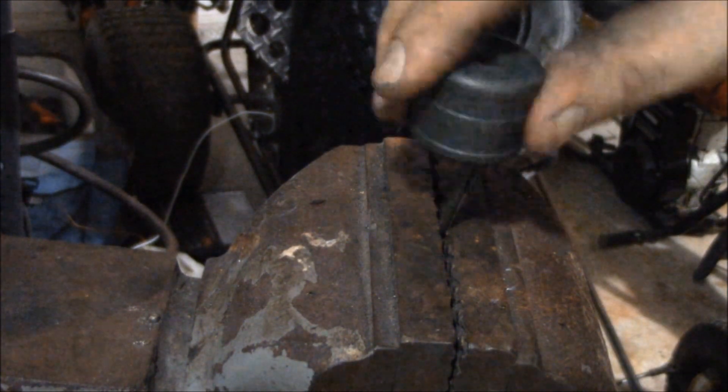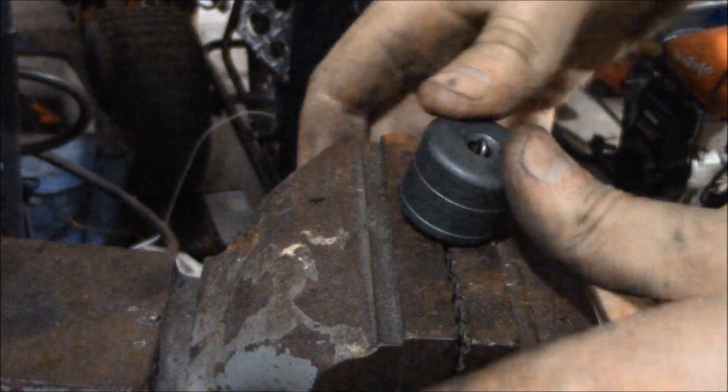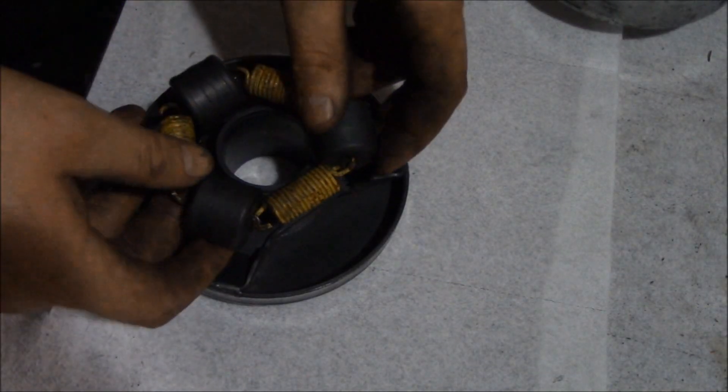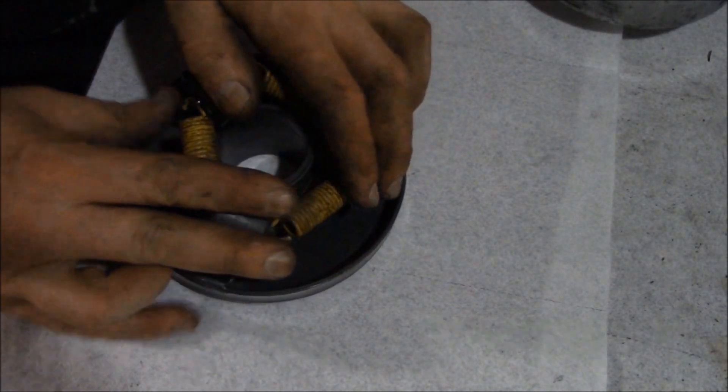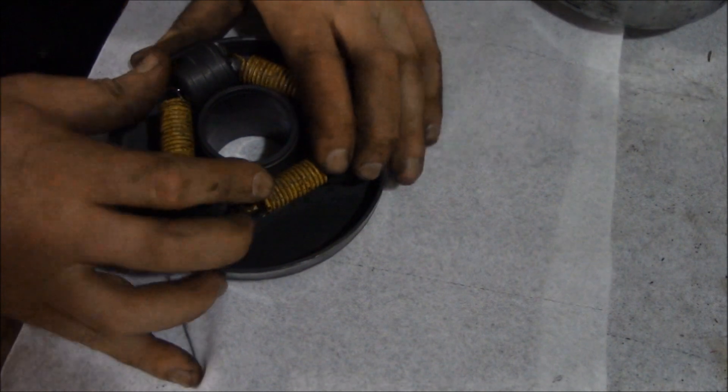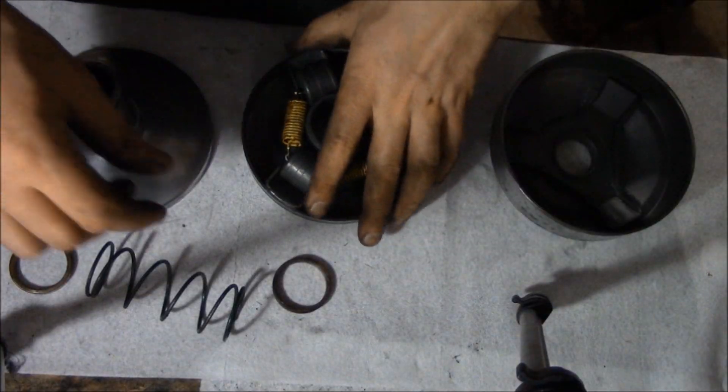So, for reassembly, opposite of disassembly, you know, put it all back together. The roller weights, they're all the same. The springs are all the same, so you can mix and match. It doesn't matter where they go, as long as you get three of them hooked up on there.